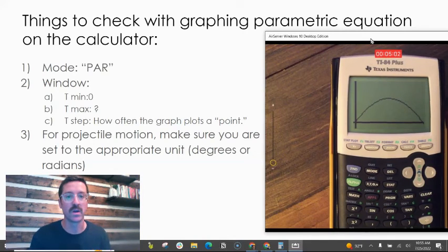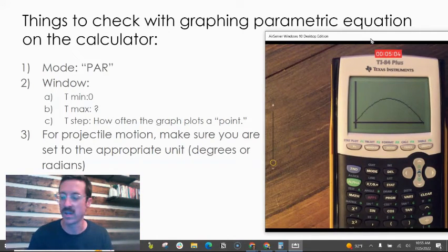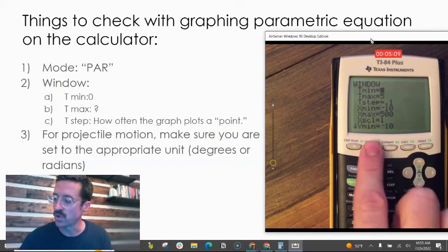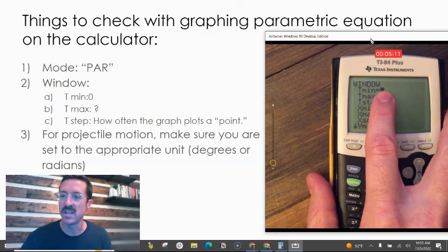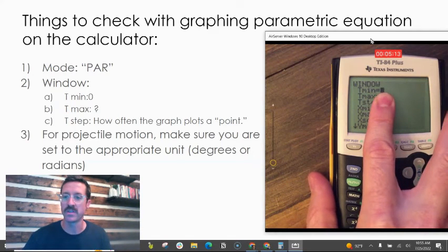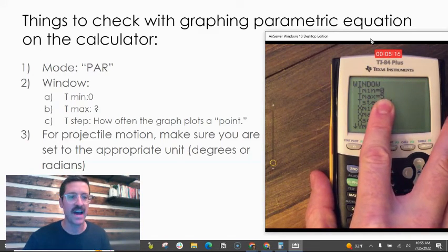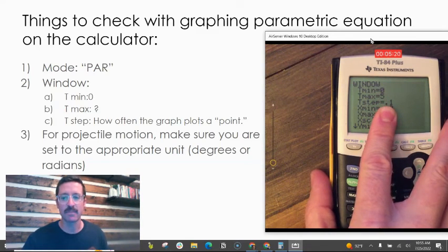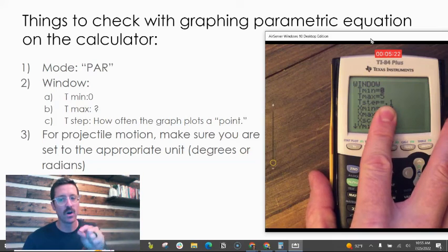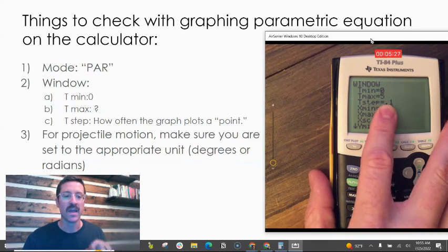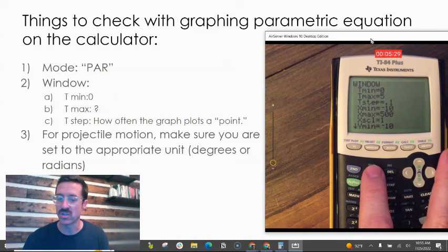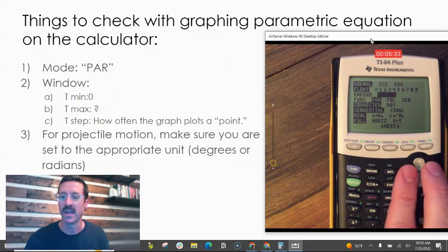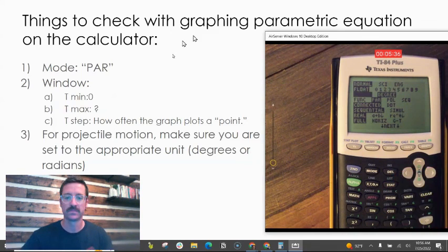On this last slide, I've summarized the things to check whenever you're graphing your projectile motion equations. Make sure your mode is parametric. Go to your window and set your t-min probably at 0 because your time probably starts at 0. Set your t-max at 5 or whatever you want the end time to be. Make your t-step something pretty small to determine how often to graph a point. And the last thing—kind of a common mistake—is to make sure you're in the appropriate angle units, radians or degrees.